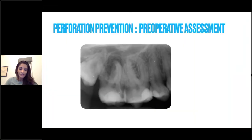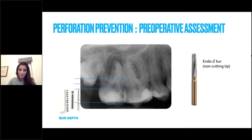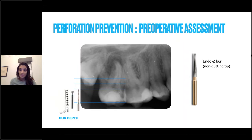For posterior perforations, prevention is key. I create measurements on the preoperative radiograph — from the occlusal surface to the pulp roof and pulp floor — and mark my burrs accordingly so I don't go deeper than necessary. I also find the Endo-Z burr very helpful: it's a non-end-cutting burr, so once you've dropped into the pulp chamber you can move it laterally to enlarge access safely without risking damage to the floor of the pulp chamber.